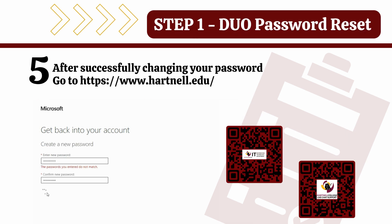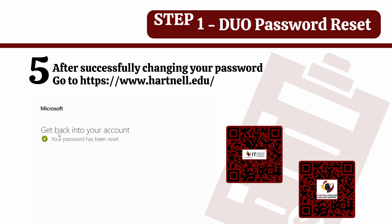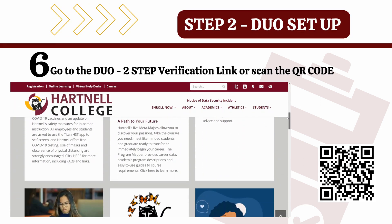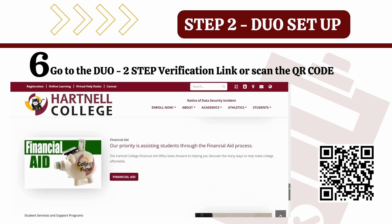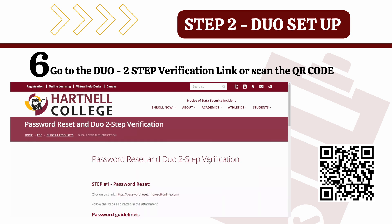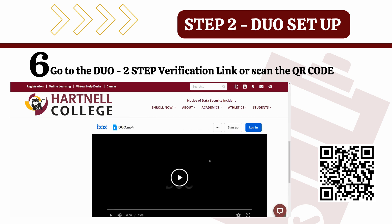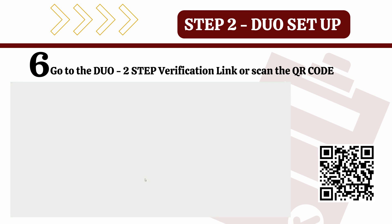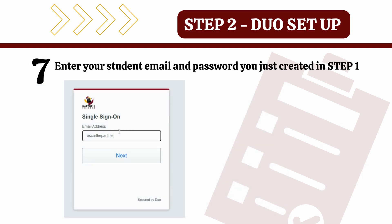After you successfully change your password, go back to our Hartnell College main page at hartnell.edu. Scroll all the way to the bottom and select the Duo Two-Step Security link. Click on the second link under Step 2, Duo Two-Step Security. Once you click on the second link, your login is your Hartnell College student email and your password is the one you just created in Step 1.